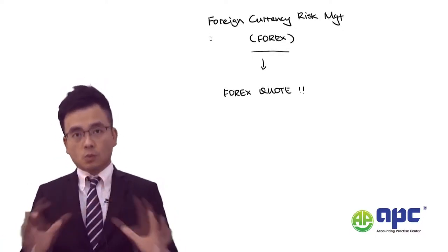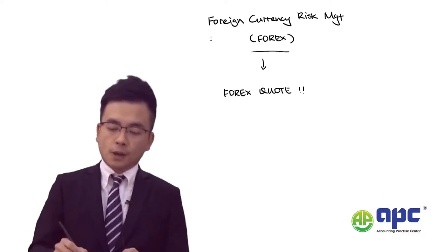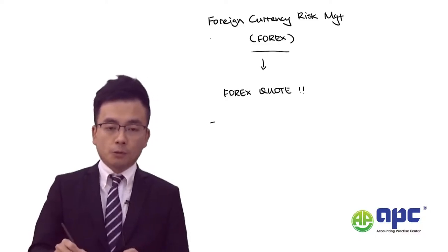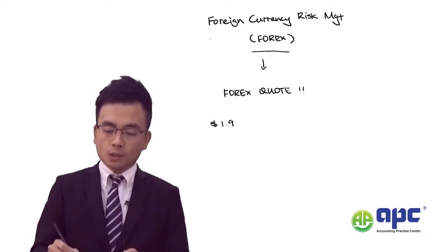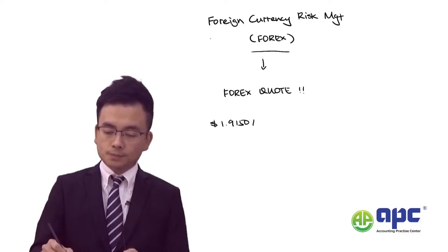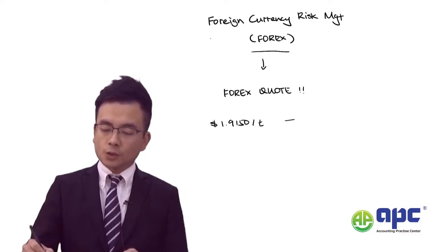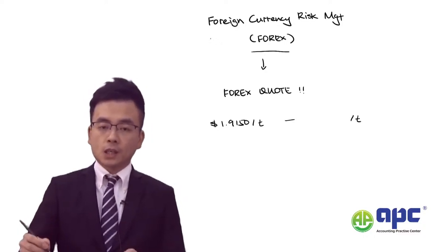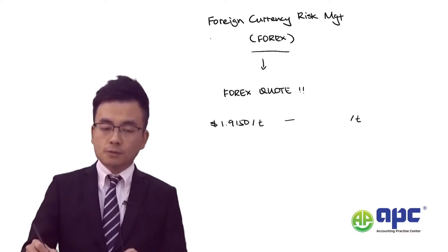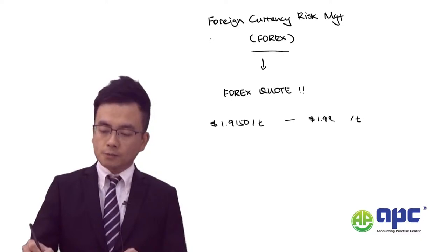The forex quote works like this: for each UK pound equals $1.9150, or for each UK pound, which means stroke UK pounds, is worth $1.9850.